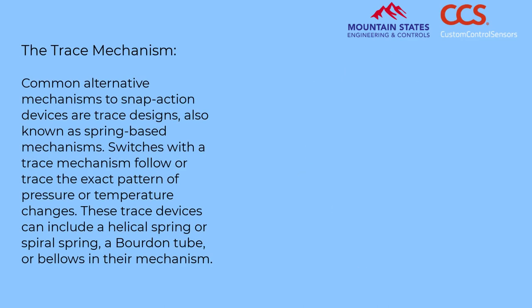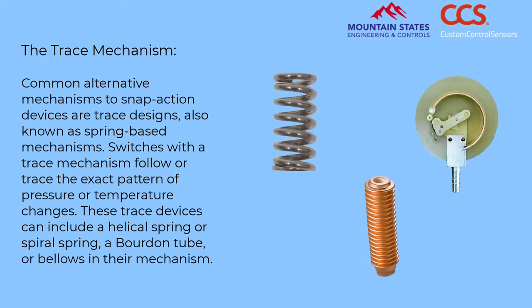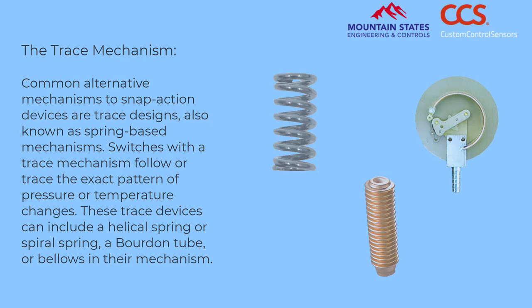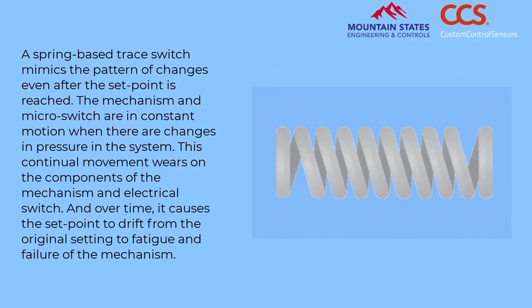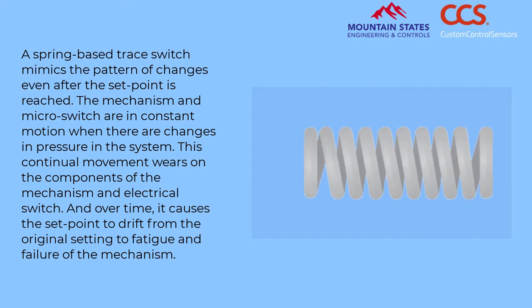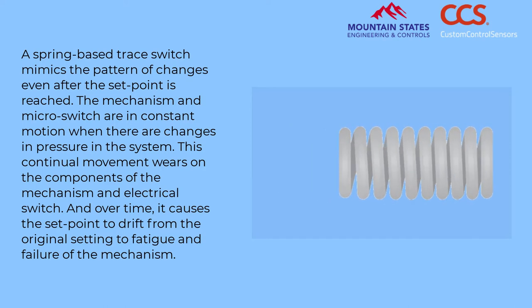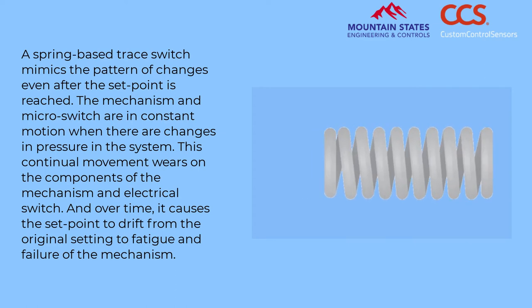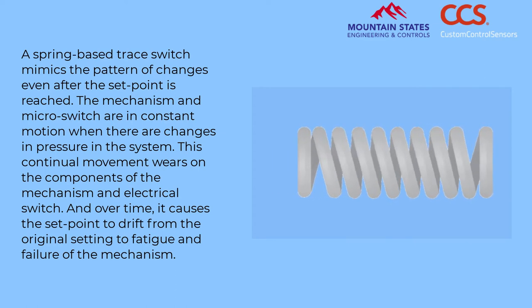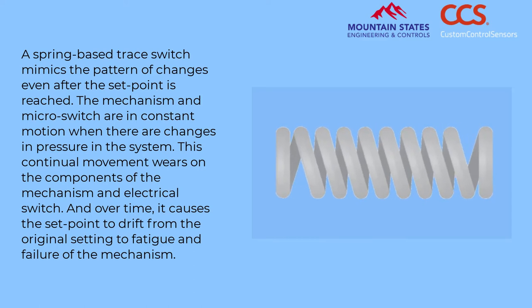The trace mechanism. Common alternative mechanisms to snap action devices are trace designs, also known as spring-based mechanisms. Switches with a trace mechanism follow or trace the exact pattern of pressure or temperature changes. These trace devices can include a helical spring or spiral spring, a Bourdon tube, or bellows in their mechanism. A spring-based trace switch mimics the pattern of changes even after the set point is reached, and the mechanism and micro switch are in constant motion when there are changes in pressure in the system.